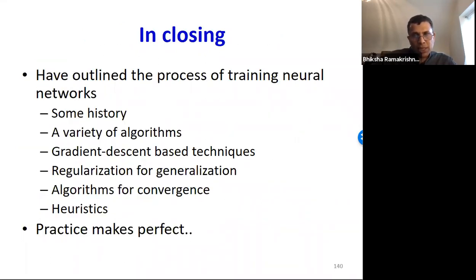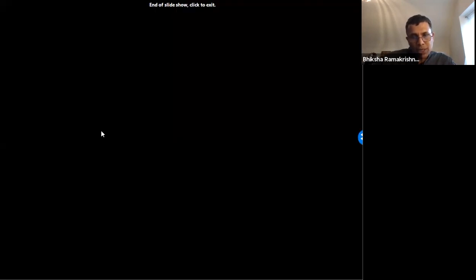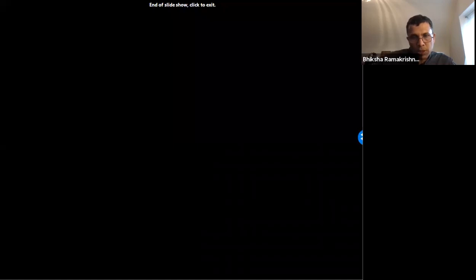So, in closing, in this series of lectures, we have outlined the process of training neural networks. We saw some history. We saw a variety of algorithms. We learned about gradient descent-based techniques, how to use regularization for generalization. We saw algorithms that enhance convergence. We saw a bunch of different heuristics. So, now you can apply all of these to train your networks. Eventually, what really works is practice. You will need lots and lots of practice. Practice makes perfect, and your homework will help with that. In the next series of lectures, we're going to move on to the next topic, which is convolutional neural networks.